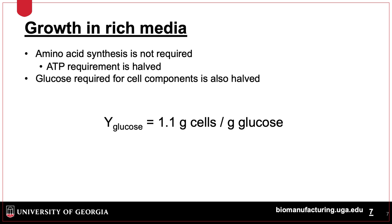If cells are grown in rich media, then less energy and materials are required to create 1 gram of cells, since the preformed building blocks come directly from the media. In this case, the yield is 1.1 grams of cells per gram of glucose.